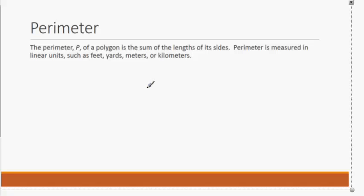So really, the perimeter of a polygon is simply the sum of the lengths of the sides. You just need to add up the lengths of all of the sides of your figure. So let's look at a couple of examples before we go into applications.